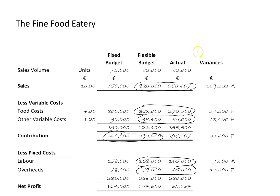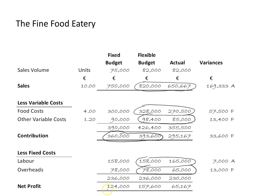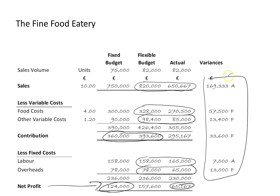Do remember when you're going through this that you can pause, rewind, and play at any point. Just back to the question — we've completed part A, prepared our statement, and now move on to part B: prepare a statement reconciling the original budgeted profit — which we've worked out at €124,000 — with the actual results, the actual profit of €65,167. We're going to reconcile this figure with this figure using the variances.